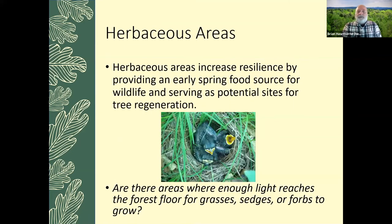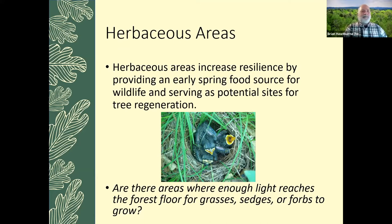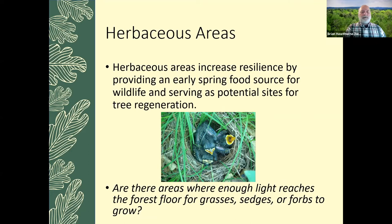In addition to shrubs, you also want to have some herbaceous areas. These increase resilience by providing an early spring food source for wildlife and can serve as potential sites for tree regeneration. Ask yourself: are there areas where enough light reaches the forest floor for grasses, sedges, or forbs to grow? Every time you have a new question to answer about your forest, it gives you something new to look for. Go take a walk around and see if you have any patches where enough light is getting to the ground. It's relatively uncommon unless you've had some sort of disturbance to the overstory, whether from gypsy moth defoliation, timber harvest, or wind disturbance.